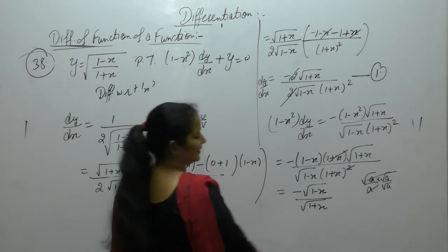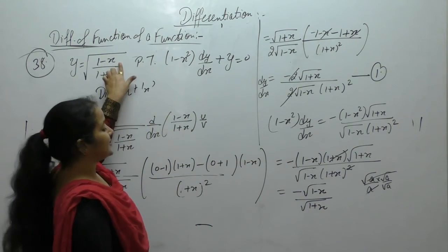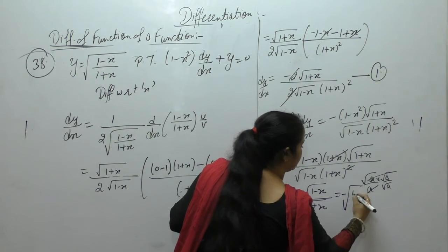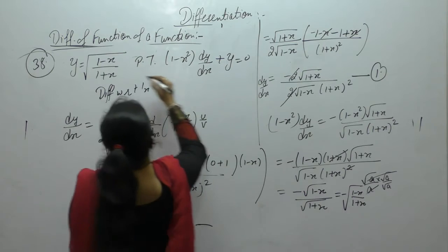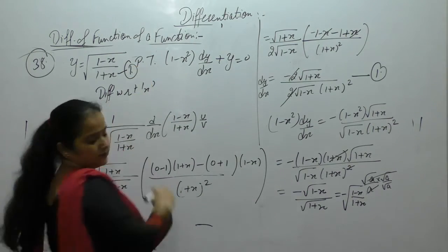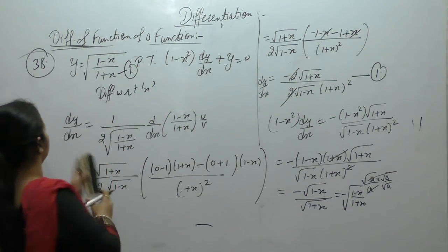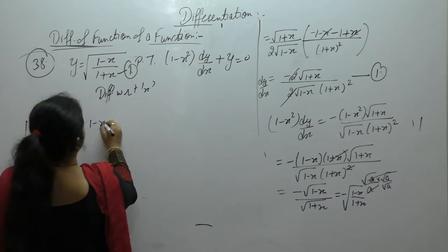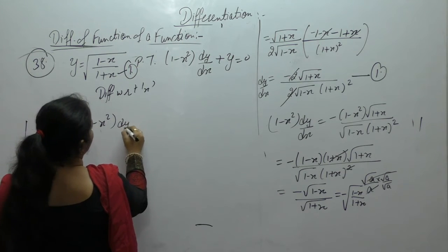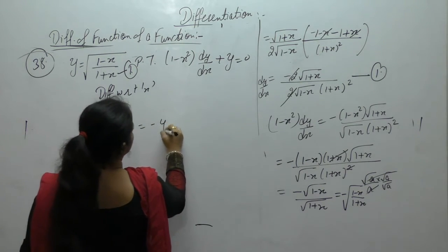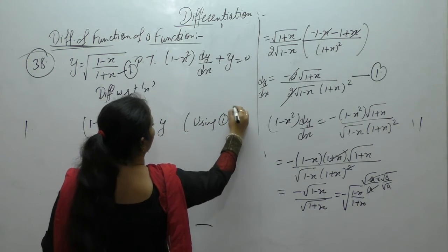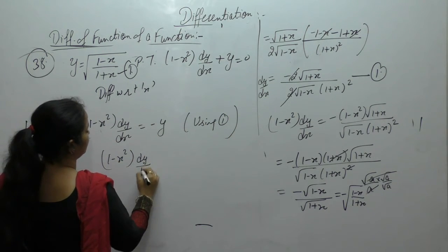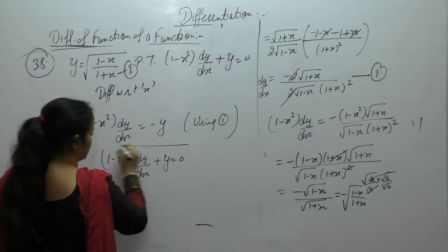So we get 1 over (1 plus x) times √((1 minus x)(1 plus x)), which we can write as √((1 minus x) over (1 plus x)). Let this expression be equation 1. By using equation 1, (1 minus x²) dy/dx equals minus y. When y goes to the left-hand side: (1 minus x²) dy/dx plus y equals 0. Proved.